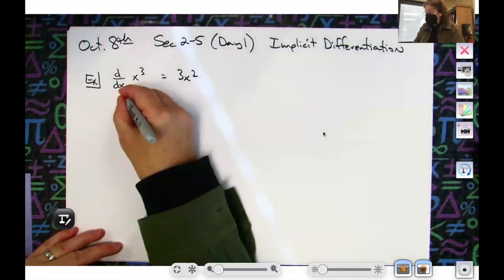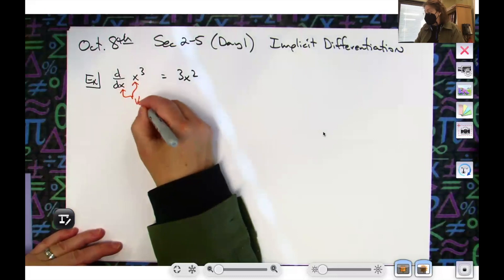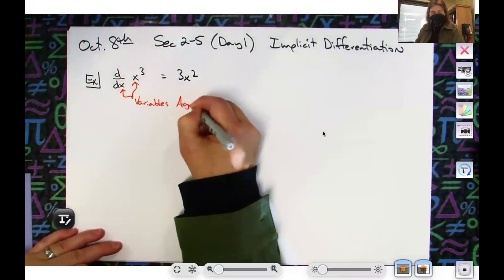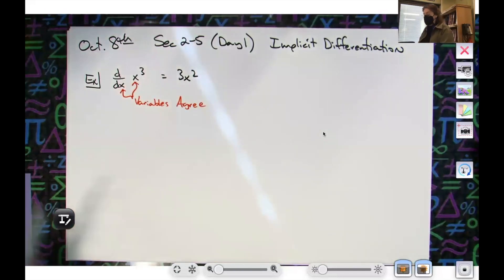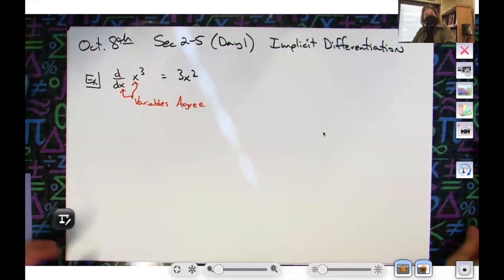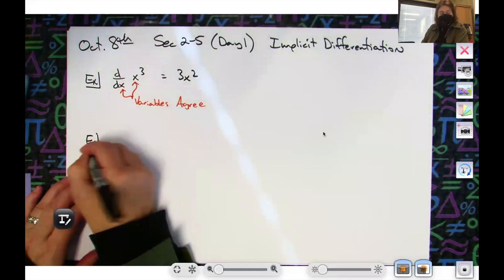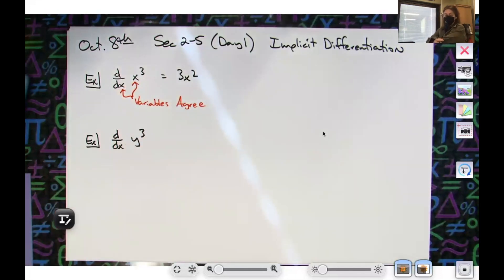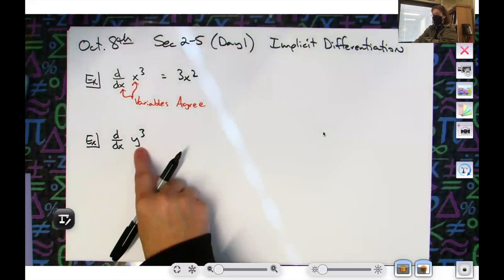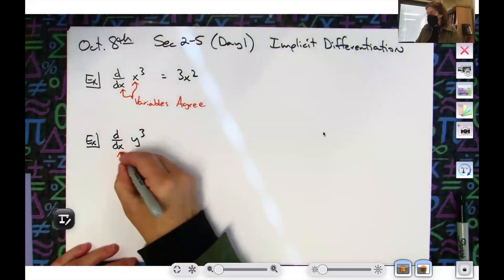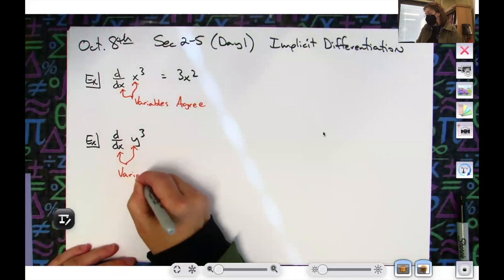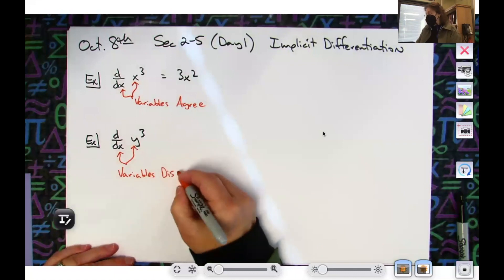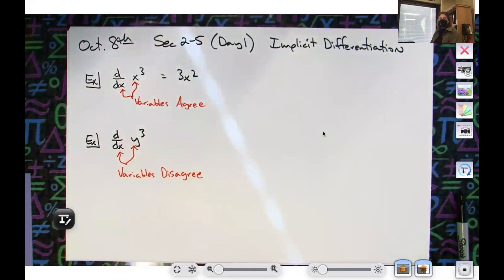Okay and this, my variables agree. Okay so that means I'm differentiating with respect to x so I'm just going to do nice little power rule. Okay now let's switch this up a little bit. What if I was doing d/dx of y to the third? Not allowed as of right now because you don't know how to do implicit differentiation. I still need to differentiate with respect to x. Okay but this is a y to the third. All right so here my variables disagree. So when my variables disagree I'm going to have to apply a chain rule.